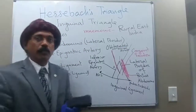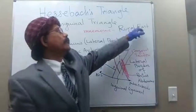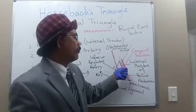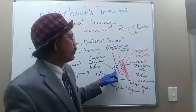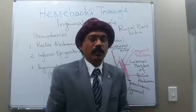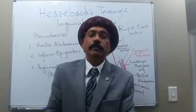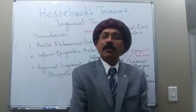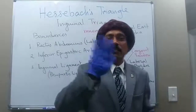E stands for the inferior Epigastric artery, and I stands for the Inguinal ligament, which forms the base of the triangle. Just remember: Rural East India. I hope you can remember Hesselbach's triangle and its importance in relation to direct inguinal hernia. If you like my video, please subscribe, support my channel, share the information with your friends, and have a nice day.